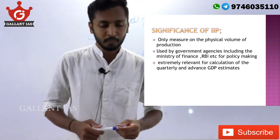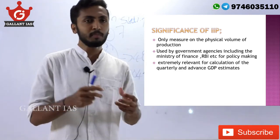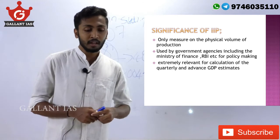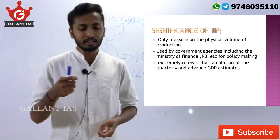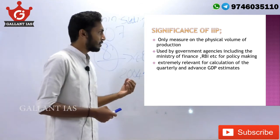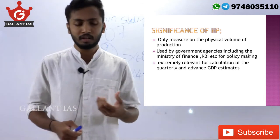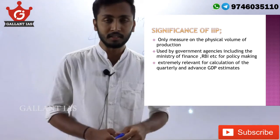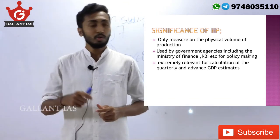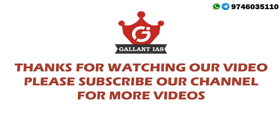The significance of the IIP is that it is the only measure of the physical volume of production — the total production output in the economy. It is used by government agencies including the Ministry of Finance and RBI for policy making, including monetary policy. It is also extremely relevant for the calculation of GDP estimates. That's all for today, thank you.